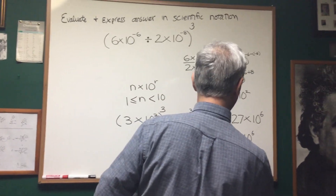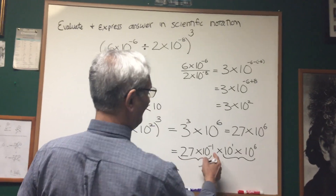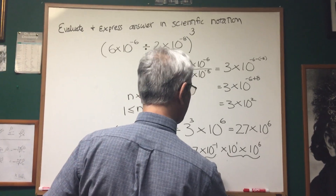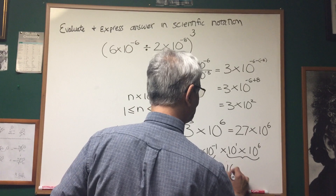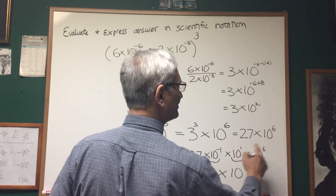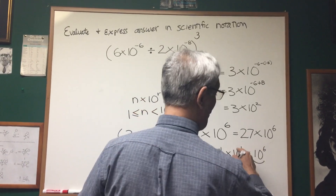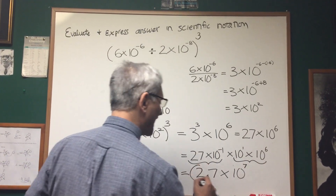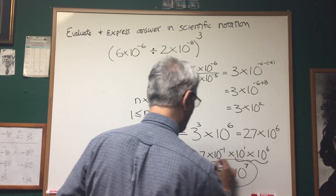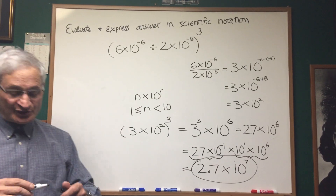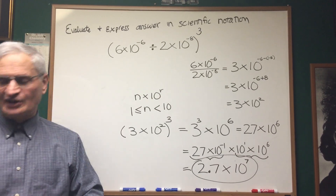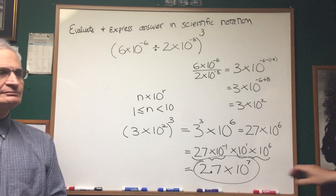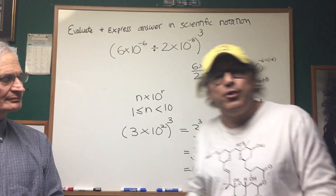Grouping them: 27 divided by 10 is 2.7, and 10 to the 1 times 10 to the 6 is 10 to the 7th. So the answer expressed in proper scientific notation is 2.7 times 10 to the 7th. That's how you do that problem.